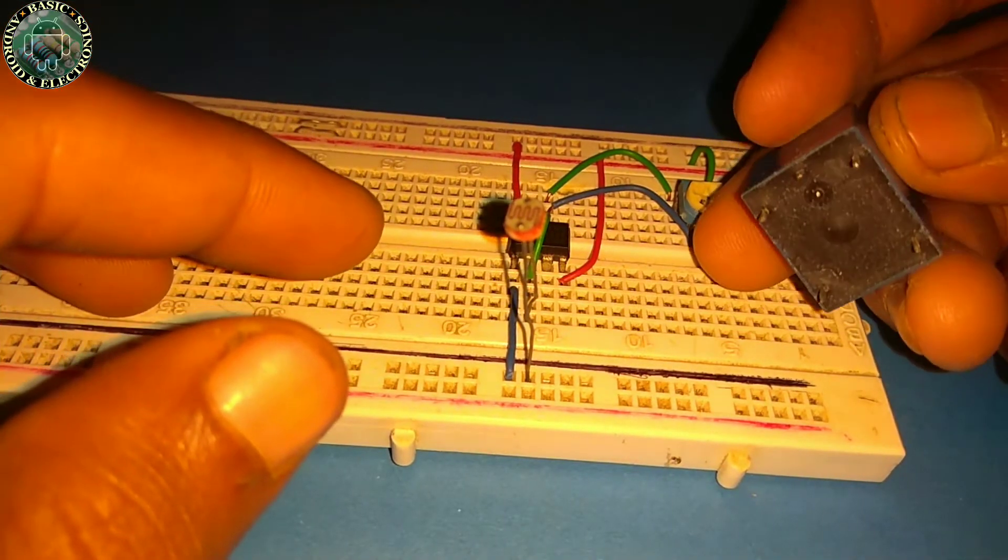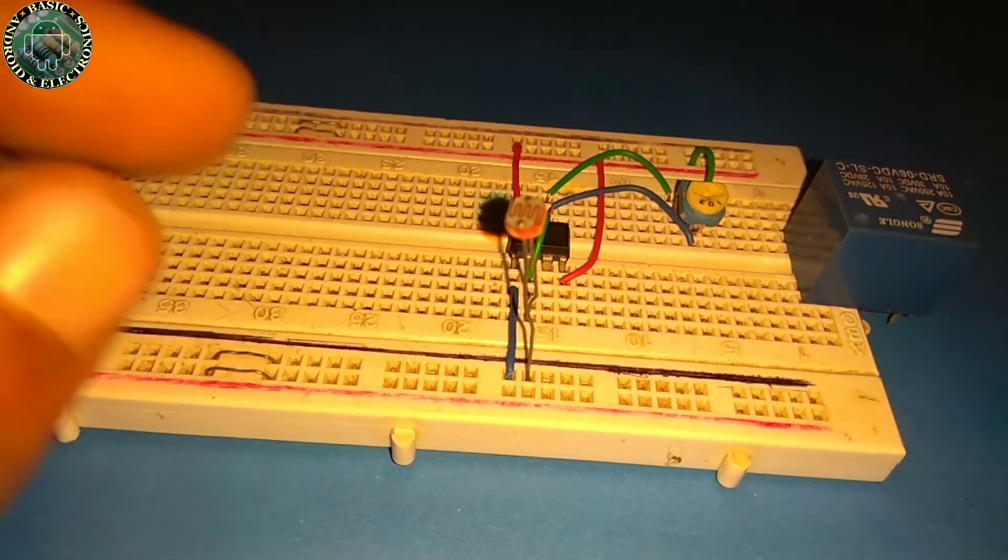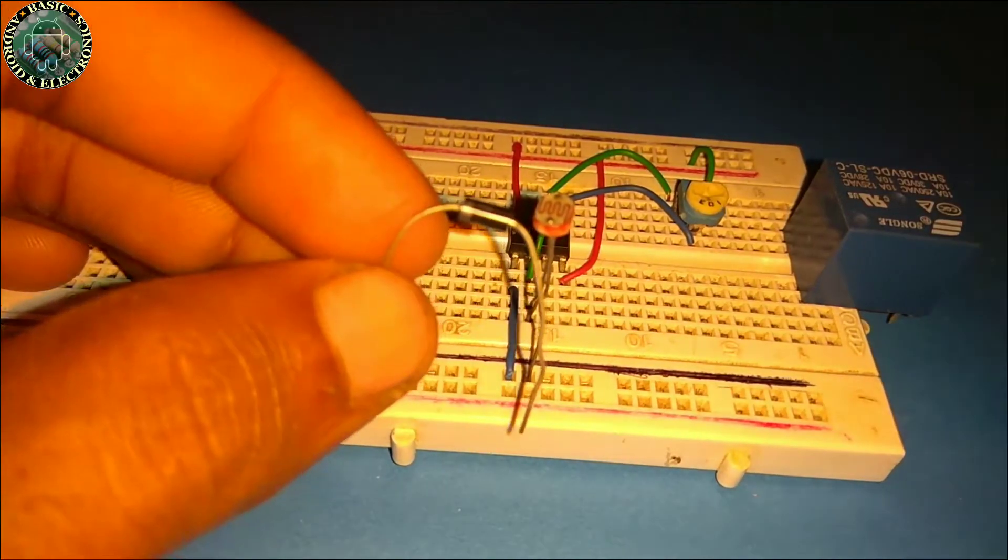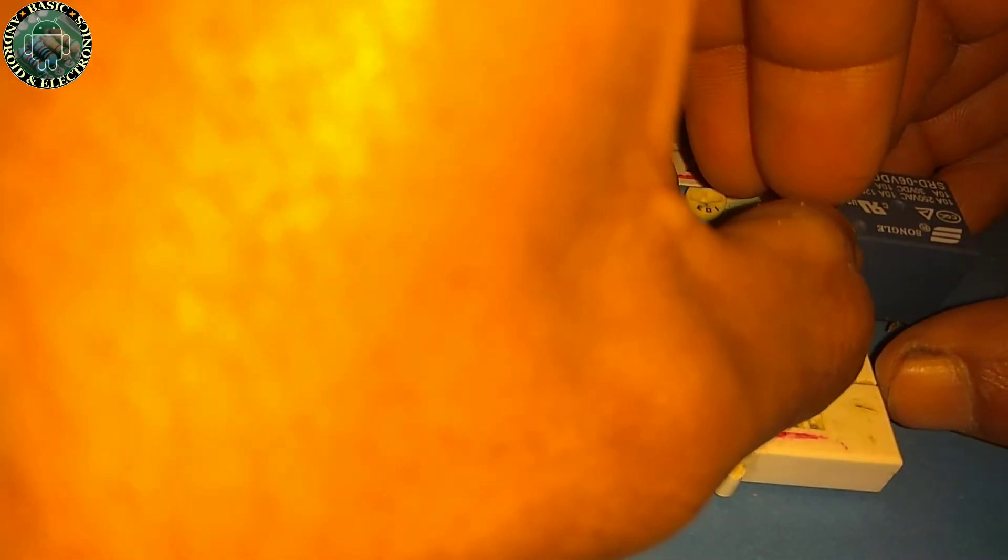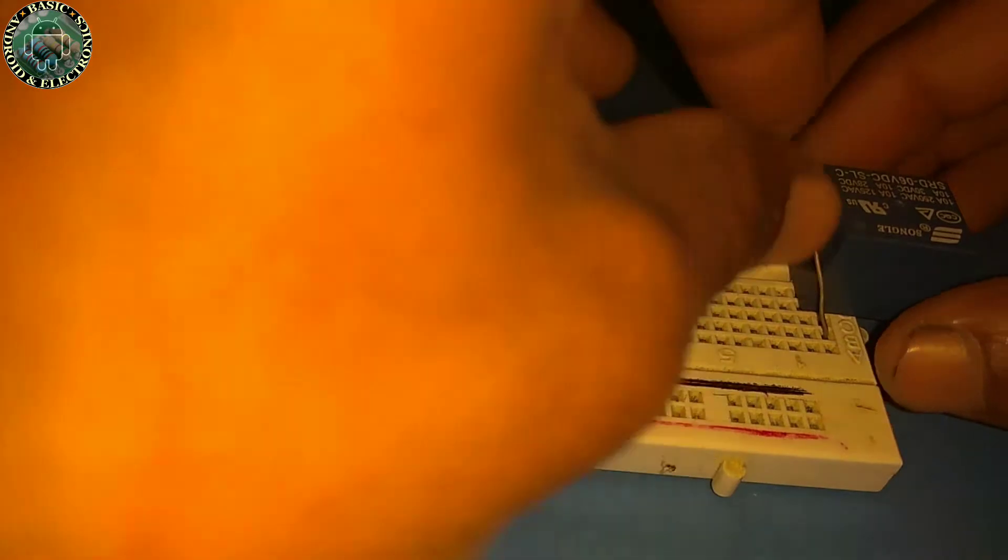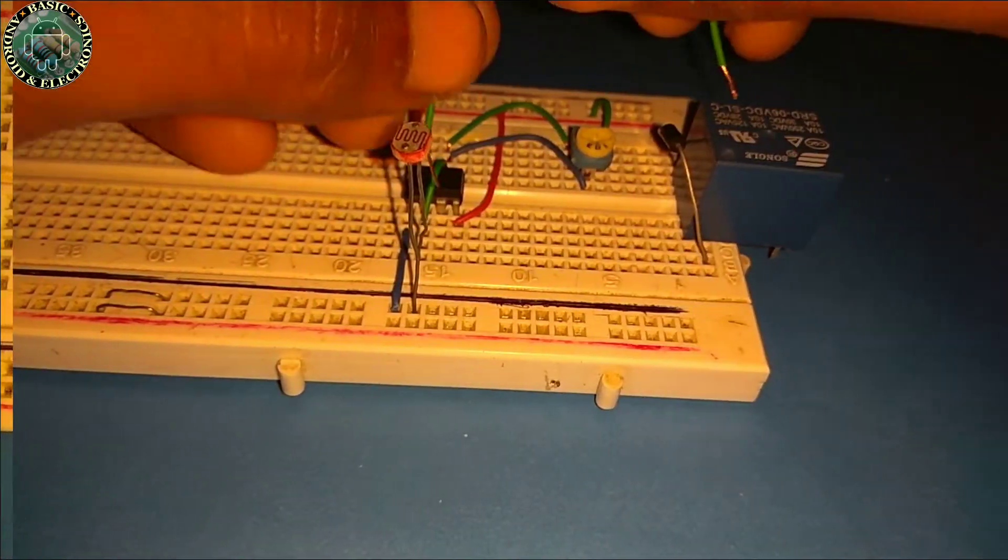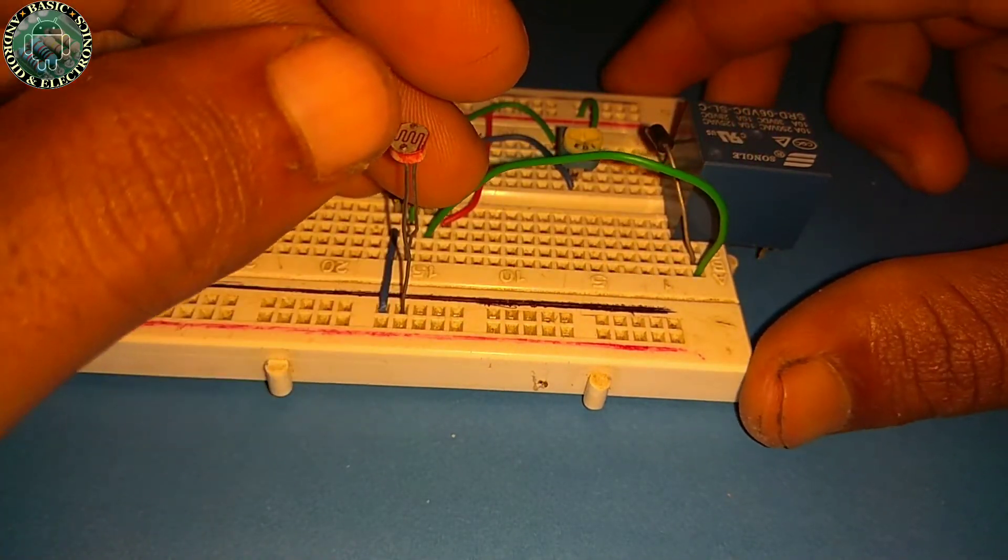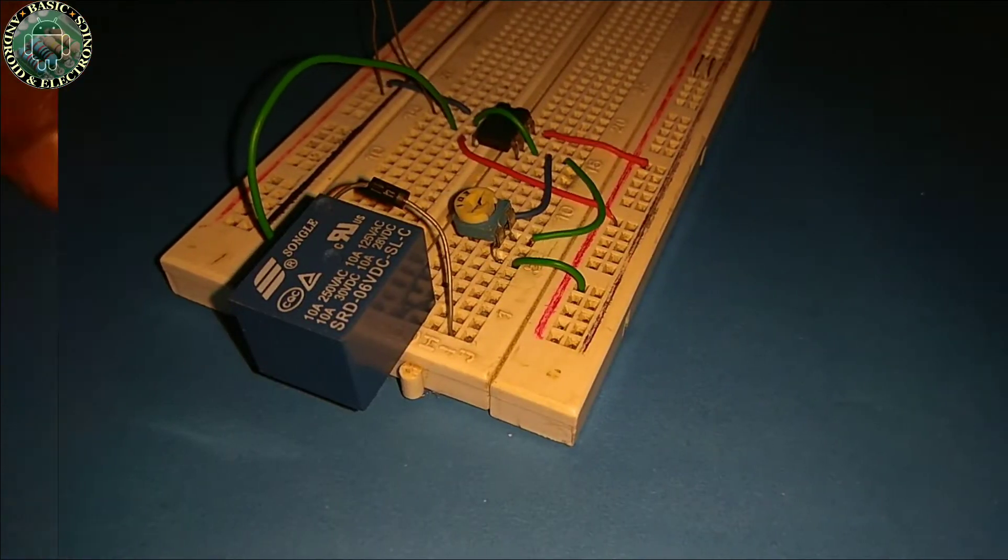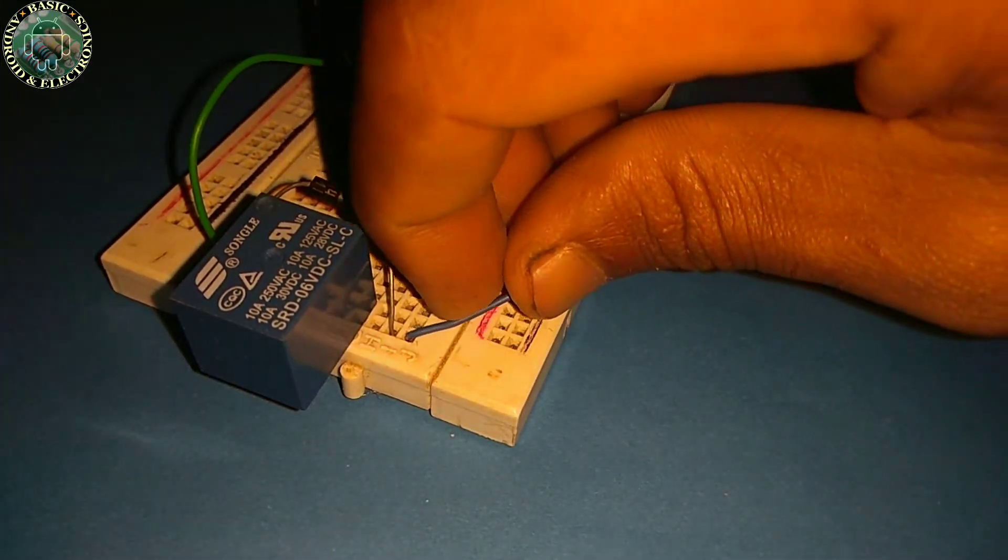Now insert the relay switch on the breadboard. Now connect the diode to the relay coil. Now connect pin 3 of the IC to the anode of the diode, and connect the cathode terminal of the diode to the positive rail of the breadboard.